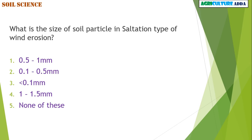What is the size of soil particle in saltation type of wind erosion? 0.5 to 1 mm, 0.1 to 0.5 mm, less than 0.1 mm, 1 to 1.5 mm, or none of these? The answer is 0.1 to 0.5 mm.